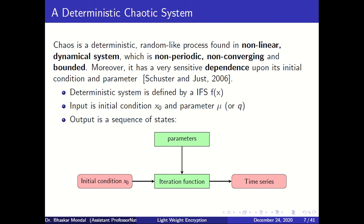That is the reason chaotic systems are nowadays considered for use in cryptographic algorithms. A deterministic system is defined as f(x), where the input is an initial condition x and parameter mu — or sometimes alpha, beta — and the output is a sequence of states. In an iterative function system, you have some initial parameter and initial condition as input, and the function iterates to generate a sequence of random numbers or bits, which can be treated as a time series.